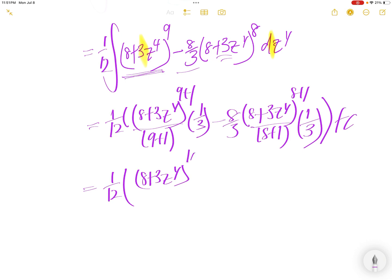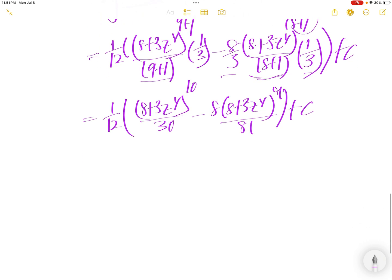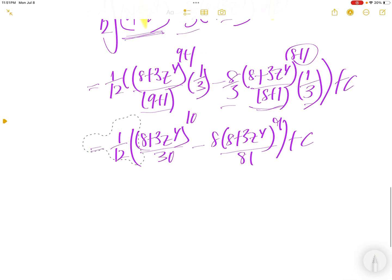1 over 12. 9 plus 1 is 10. Z to the power of 4 to the 10. Here also 10. 10 times 3 is 30. Minus 8. 8 plus 3z to the power of 4. 8 plus 1 is 9. 9 downstairs. And then, this is 9 times 9, 81. Plus c.